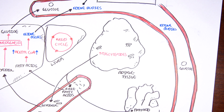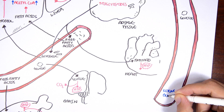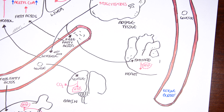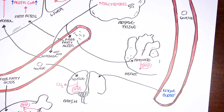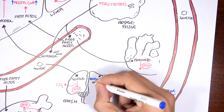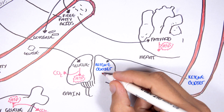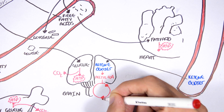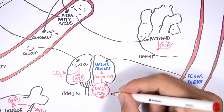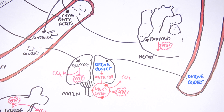Ketone body levels in the blood therefore increase during fasting when the body is seeking other means of energy. Ketone bodies can actually be used by the brain: they are converted to acetyl-CoA, which then enters the Krebs cycle to produce ATP and carbon dioxide as waste. Interestingly, the brain normally always uses glucose as its main source of energy under normal circumstances.